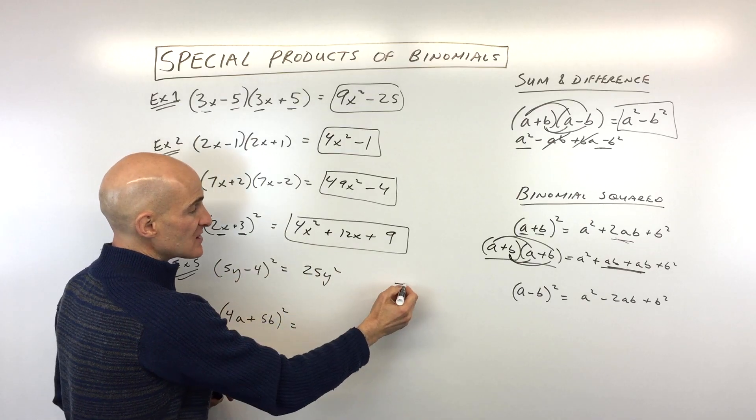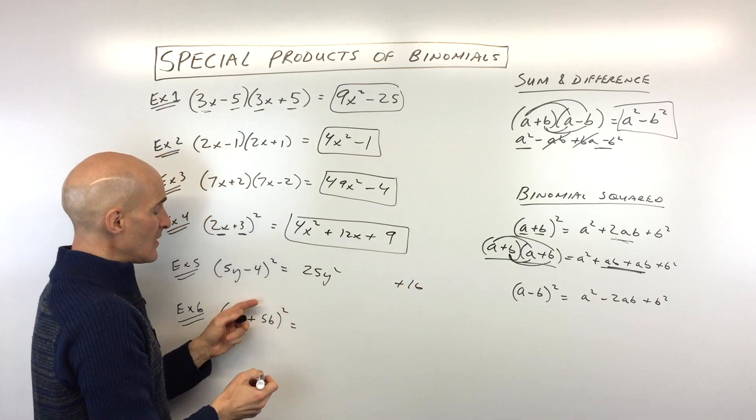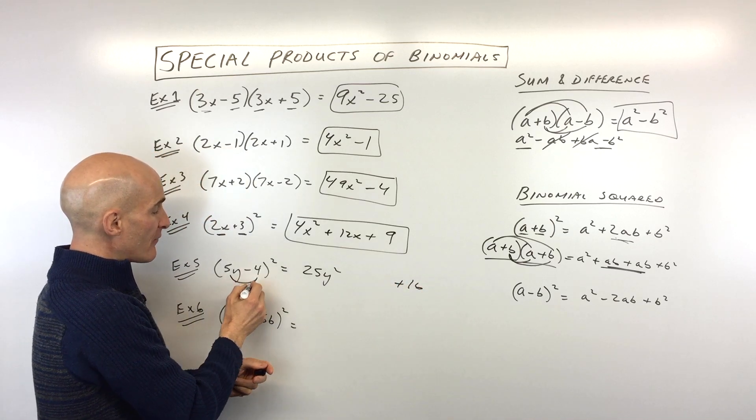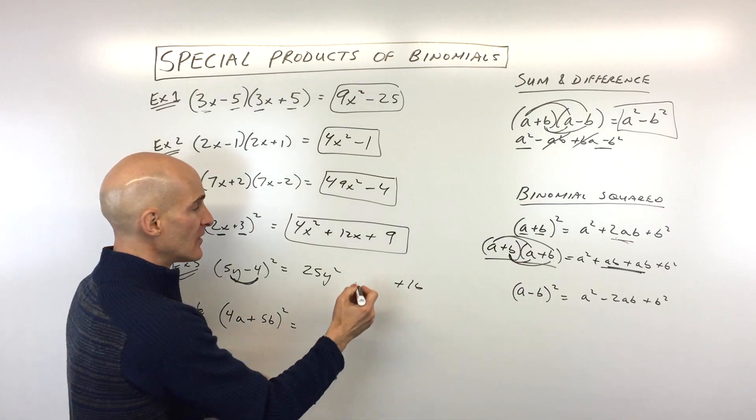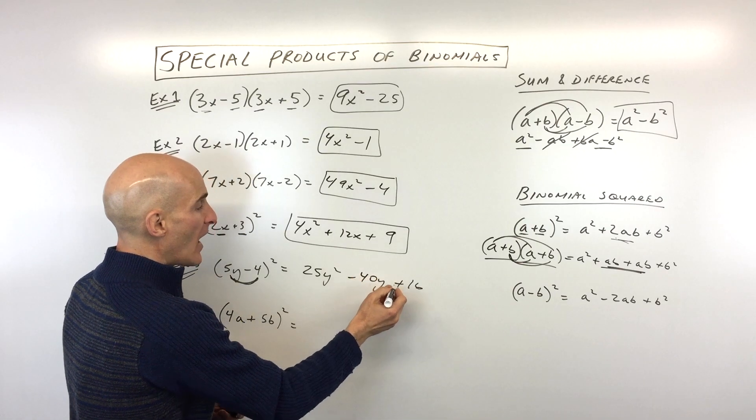Negative 4 squared is negative 4 times negative 4. That's a positive 16. But to find that middle term, we multiply 5y times negative 4. That's negative 20y. When we double it, that's negative 40y.